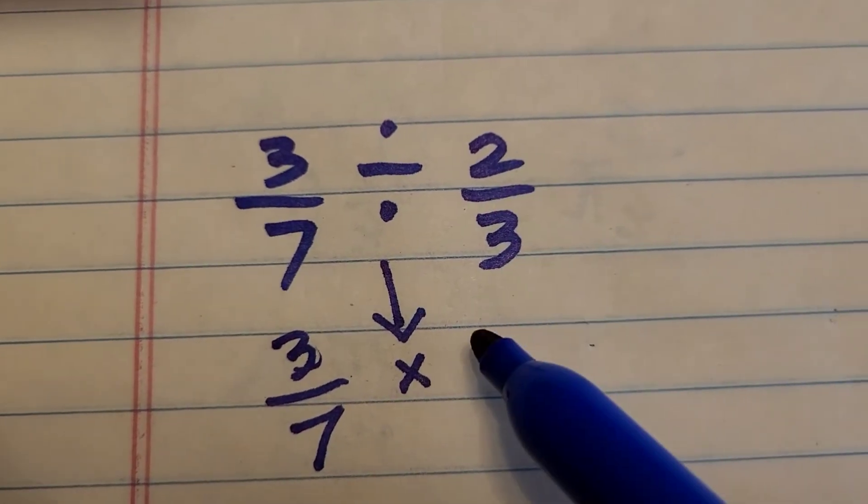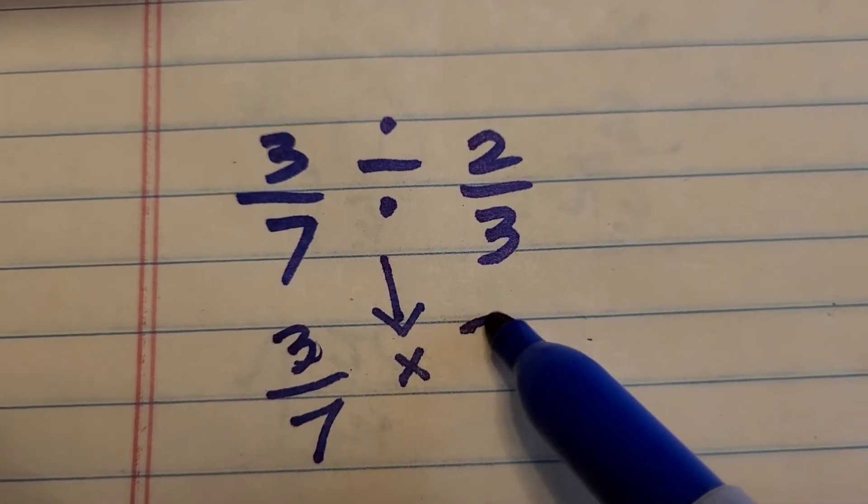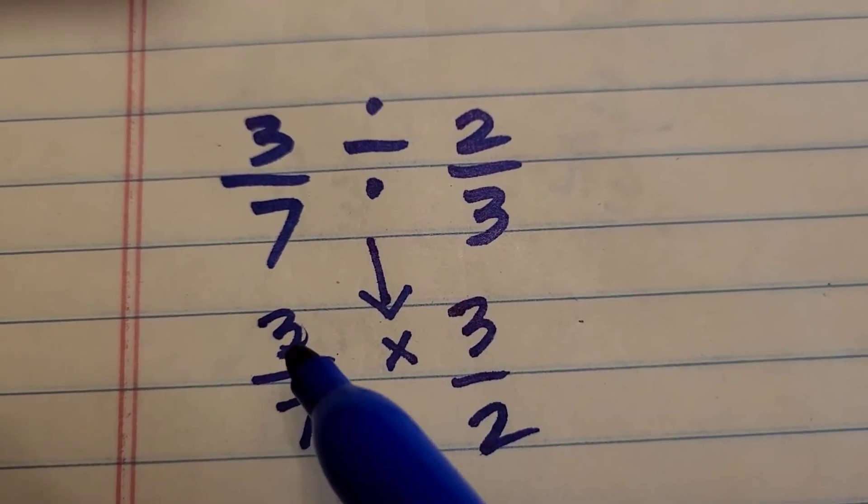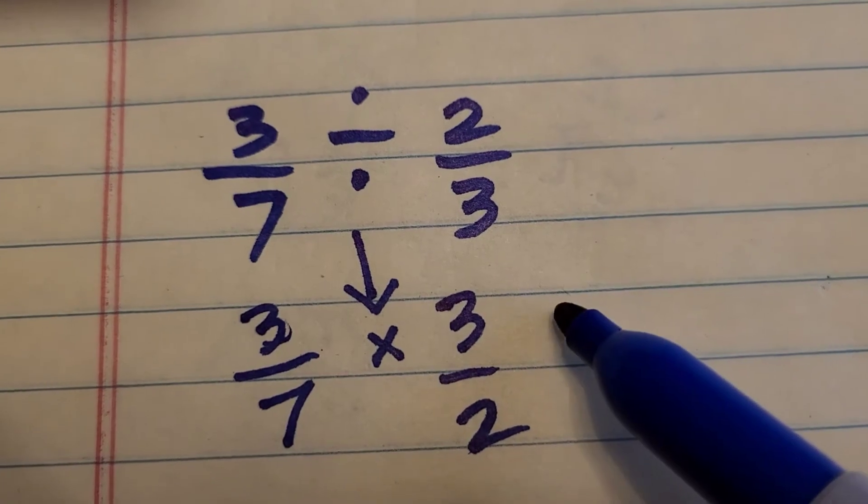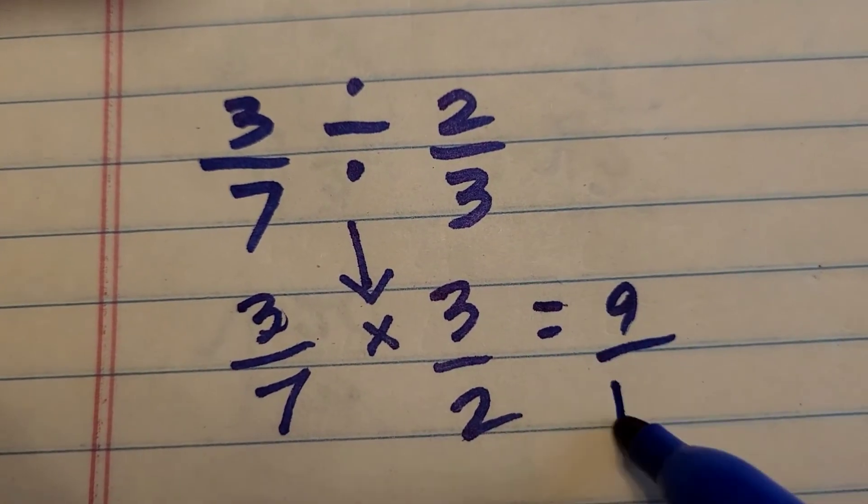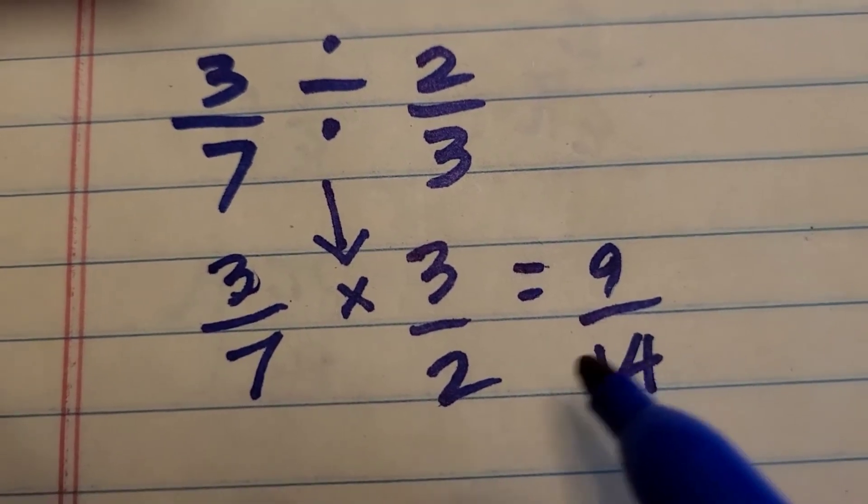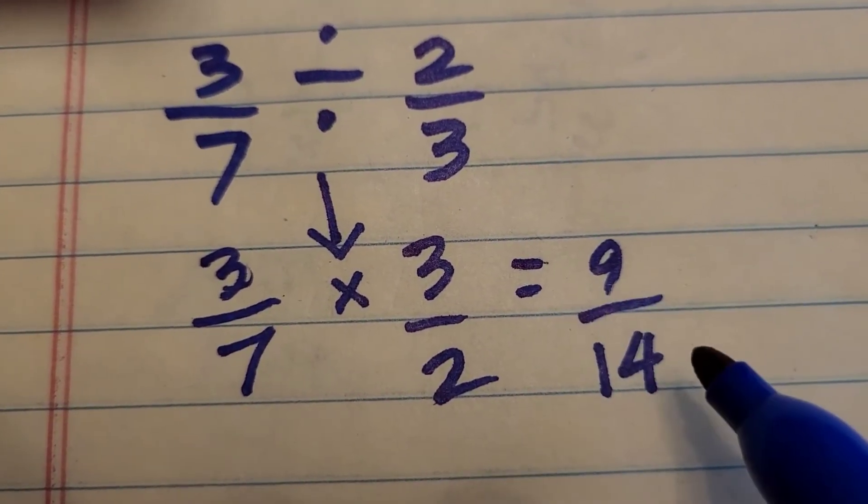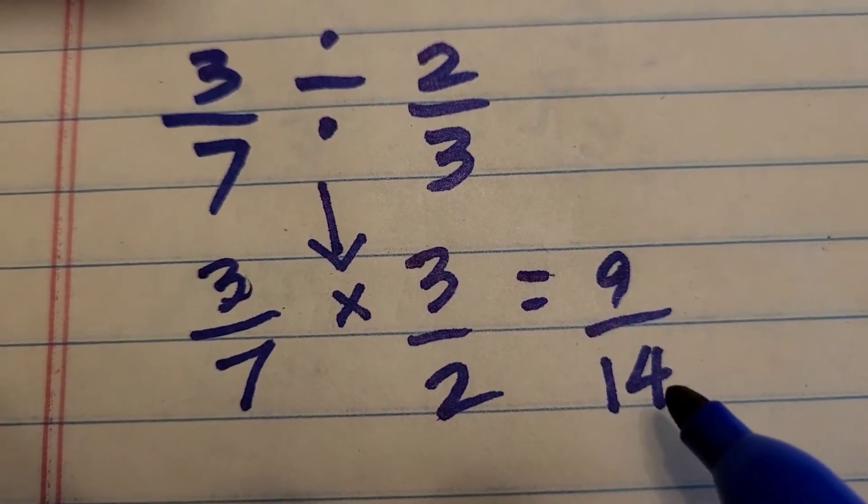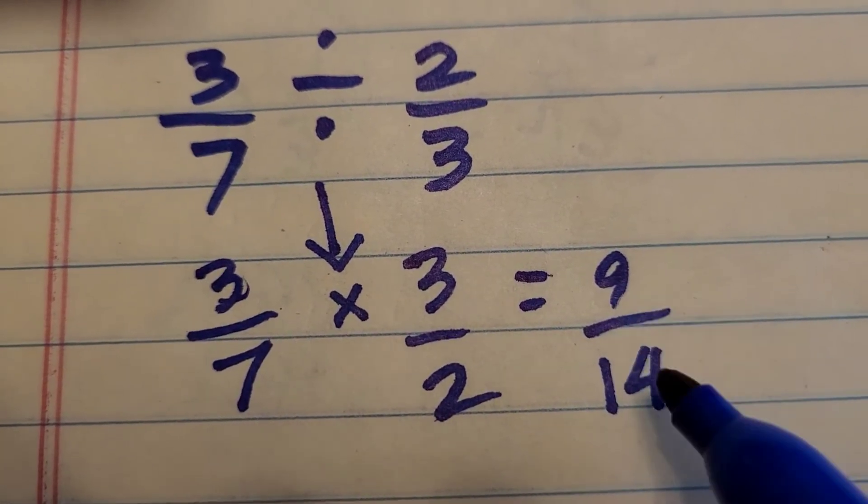2/3, if we turn it on its head or flip it, becomes 3 over 2. And then we go ahead and do the multiplication. 3 times 3 is 9 and 7 times 2 is 14. Always checking to see if our value can be reduced. In this case, 9 over 14 cannot be reduced any further, so we leave it as is.